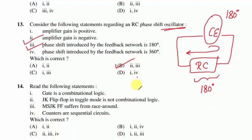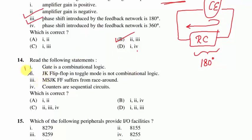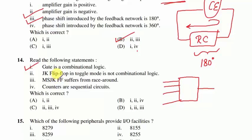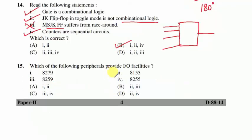Question 14: Statement 1 — a gate is a combinational circuit (NAND, NOR, XOR — all combinational). Statement 2 — JK flip-flop in toggle mode is not a combinational circuit (true; flip-flops are sequential logic with memory and feedback). Statement 3 — master-slave JK flip-flop suffers from race-around condition (false). Statement 4 — counters are sequential circuits (true). So 1, 2, and 4 are correct — option B follows.